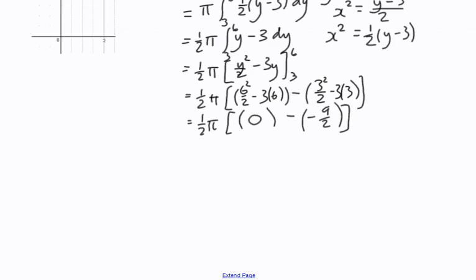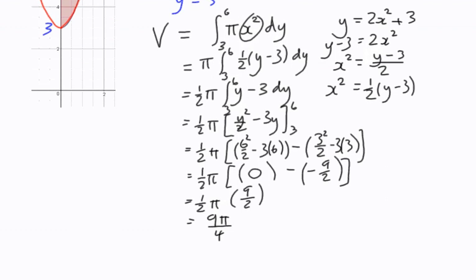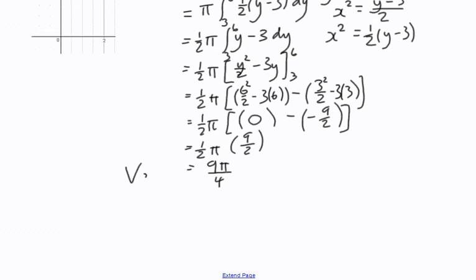Which means that we end up with the value of a half pi multiplied by 9 over 2, which gives us 9 pi over 4. Now, what have we got? All these equal signs. We're dealing with volume. And so, having worked out all of that, the volume is 9 pi over 4 cubic units.